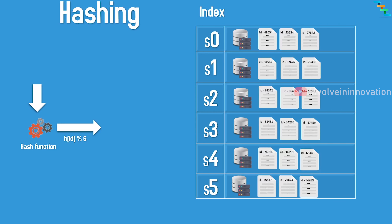This is perfectly fine — all data is stored using the hash function. For retrieval of ID 34263, we perform hash(34263) modulo 6, which gives value 3. So we know the data is in server instance 3 and can go directly there. This drastically increases performance compared to randomly storing data across instances.